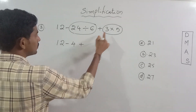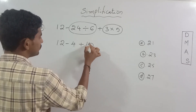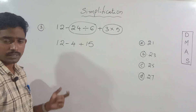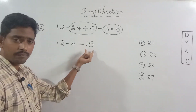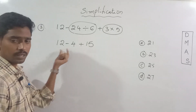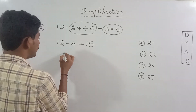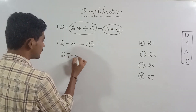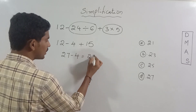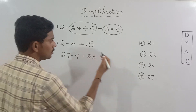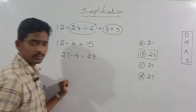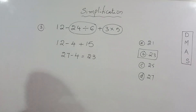3 into 5 is 15. Here positive number: 12 plus 15. 12 plus 15 is 27. 27 minus 4. 27 minus 4 is 23. So 23 is the correct answer.